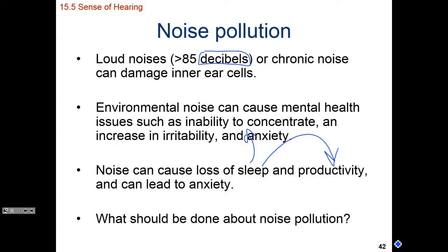What can you do about noise pollution? Simple things like closing windows or using earplugs help. If somebody has permanent damage to their cochlea, an artificial cochlea — called a cochlear implant — can be embedded in their ear to allow them to hear.